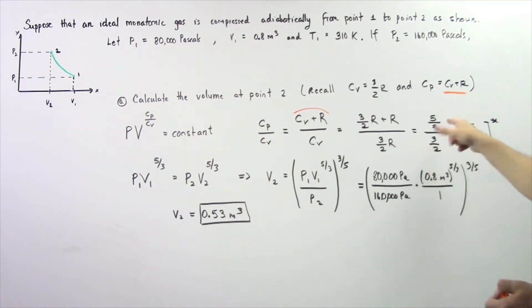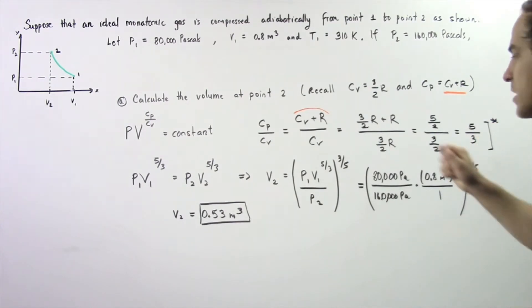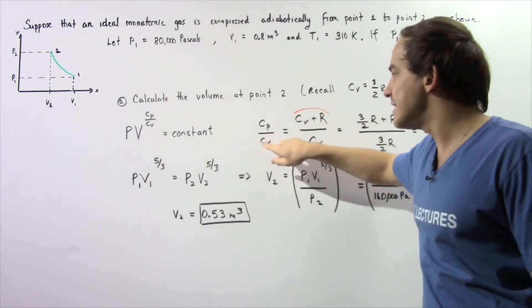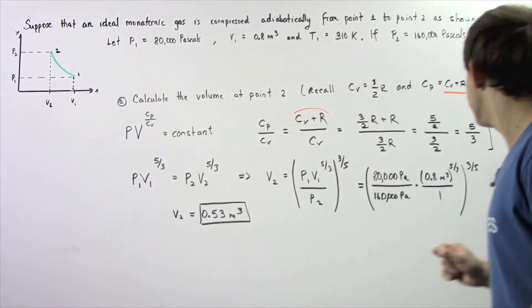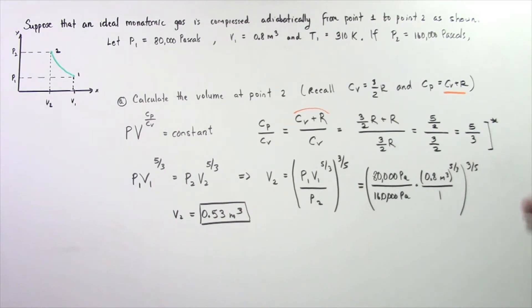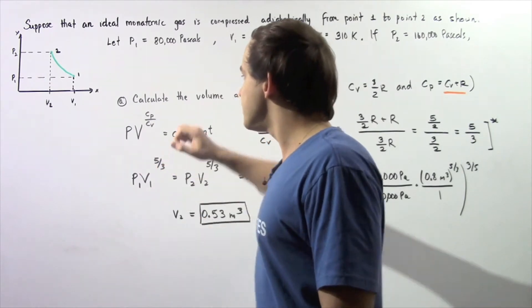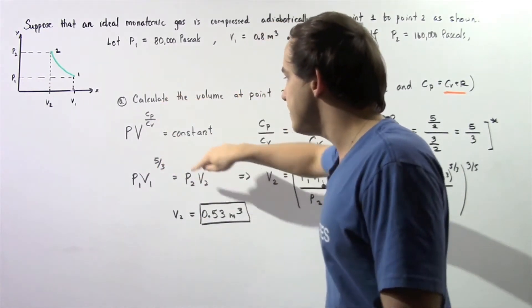The 2's cancel and we're left with 5/3. So the ratio CP divided by CV for a monatomic ideal gas is equal to 5/3.